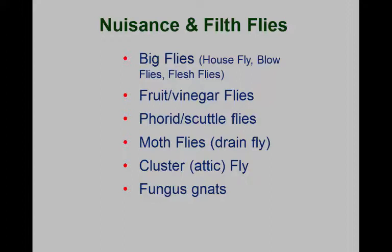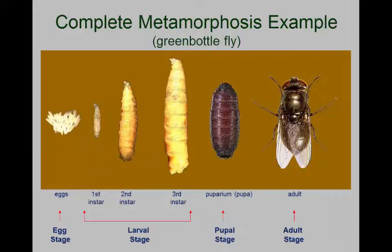Technically, entomologists call those vinegar flies. To us, fruit flies are a different group of flies that actually get into things like tree fruits. There are some other nuisance flies that we also need to cover. Remember that all flies have that complete life cycle, and the flies that we're talking about are considered to be the upper group of flies, so they have that more traditional life cycle that we're familiar with.